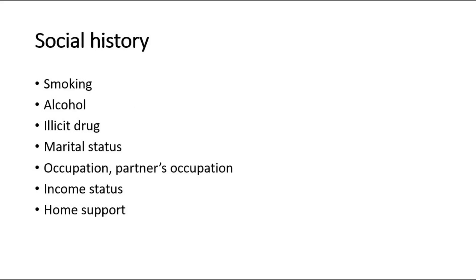For social history, is she a smoker or alcohol drinker? Is she taking any illicit drugs? The marital status — whether she is a single mother or married with a partner. Her occupation and her partner's occupation to estimate the income status and whether they can cope with this pregnancy. Is there any housing problem? How is her home support — is there anyone available to help at home? That is all for obstetrics history taking. Thank you.